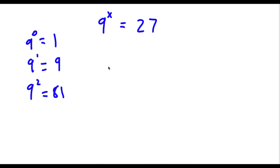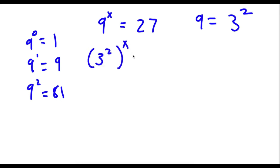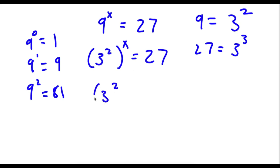Alright, so to solve this, it's actually really simple. 9 is the same thing as 3 to the power of 2. So now if I replace 9 with 3 to the power of 2, I get 3 to the power of 2 to the power of x is equal to 27. Now 27 is equal to 3 to the power of 3, so I'm going to replace 27 with 3 to the power of 3. So now I have 3 to the power of 2 to the power of x is equal to 3 to the power of 3.